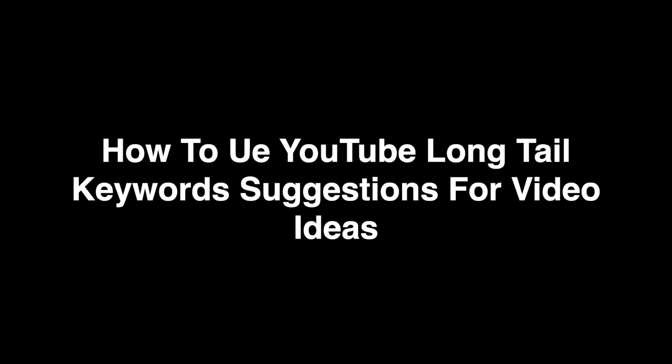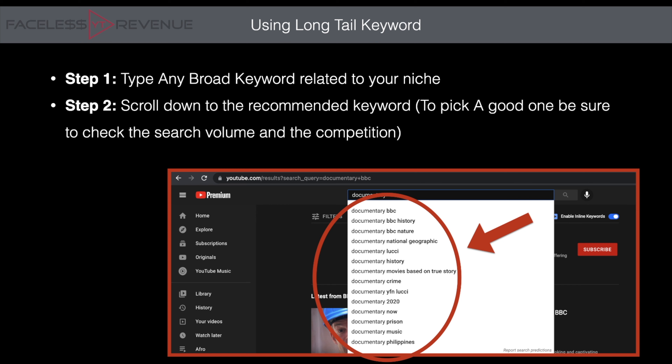In this one we're going to talk about how to use YouTube long-tail keyword suggestion for video ideas. Basically in simple steps, it's just really two steps. What long-tail keywords are is if you type anything on YouTube, for example like 'documentary,' once you click space it would recommend terms for you — like BBC documentary, BBC history documentary, BBC nature documentary, national geography. These long-tail keywords are being recommended because these are things that people are actually searching for.